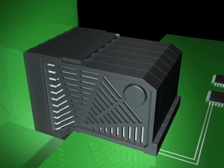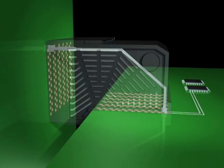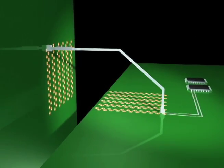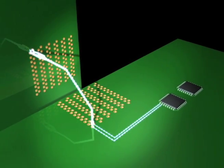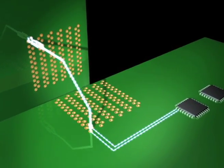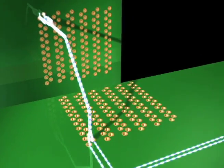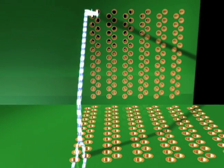Routing differential pairs in a row creates signal paths of equal distance, eliminating skew or signal delay within the pair. This design also simplifies PCB routing.